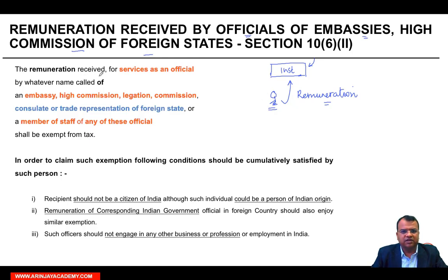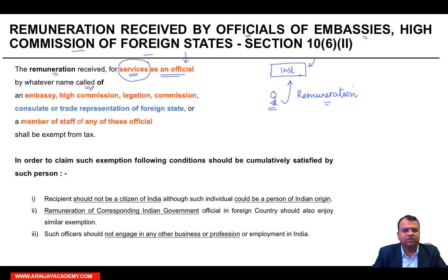The remuneration received for services as an official — अगर आपको कोई remuneration मिलता है for services as an official, जो आपकी service है वो एक official की capacity में है. अगर official capacity में नहीं है, तब जो आपको remuneration मिलेगा वो exempt नहीं होगा — by whatever name called. Of an embassy, high commission, legation, commission, consulate or trade representation of a foreign state.